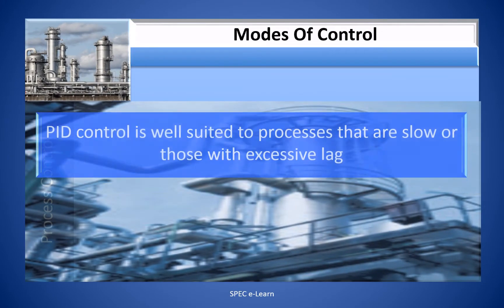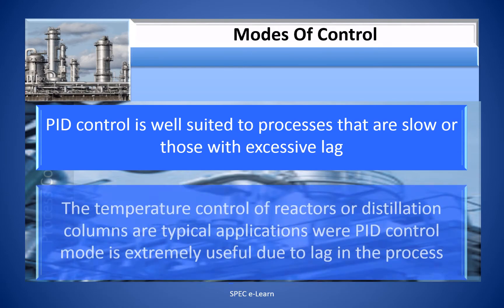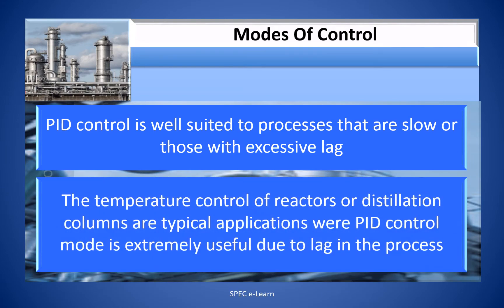PID control is well suited to processes that are slow or those with excessive lag. The temperature control of reactors or distillation columns are typical applications where PID control mode is extremely useful due to lag in the process.